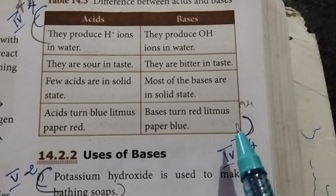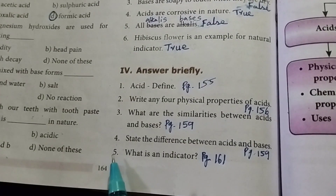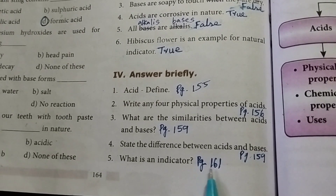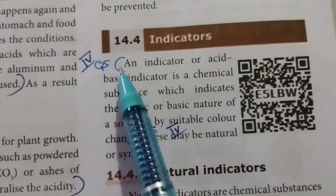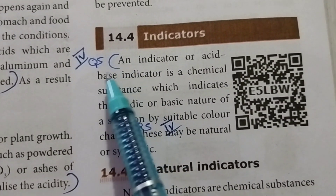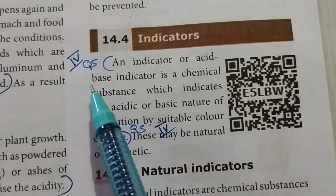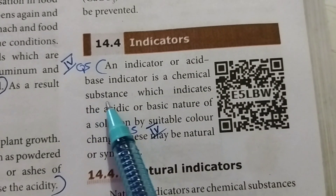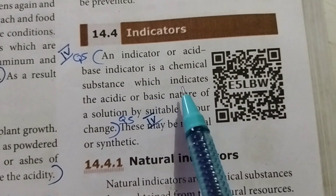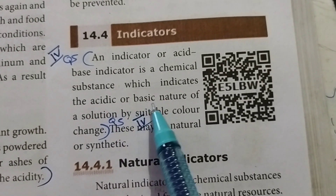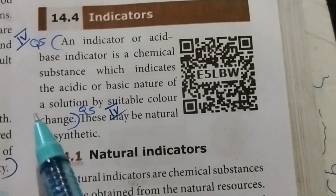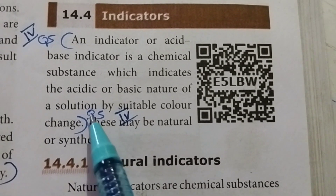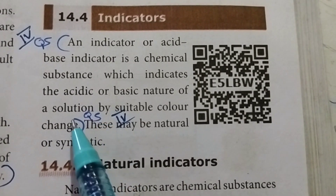Fifth question: what is an indicator? Take page number 161. An acid-base indicator is a chemical substance which indicates the acidic or basic nature of a solution by a suitable colour change.